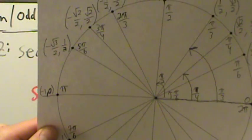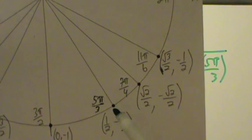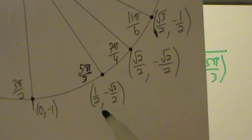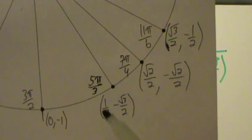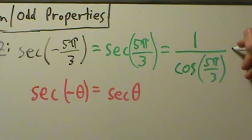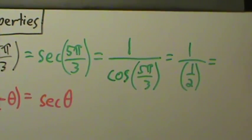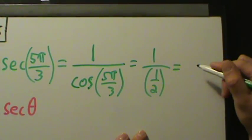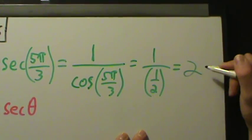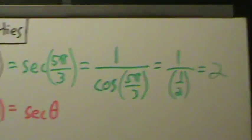What is the cosine of 5 pi over 3? On the unit circle, 5 pi over 3 is right here. Cosine is the x-coordinate, and the x-coordinate is 1 half. So this is 1 divided by 1 half — and dividing by 1 half is multiplying by 2 — so 1 divided by 1 half equals 2. Secant of negative 5 pi over 3 is 2.